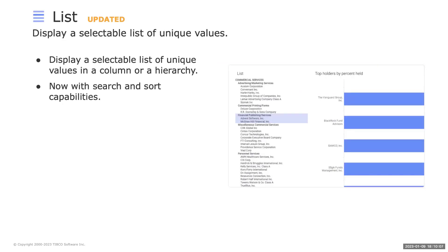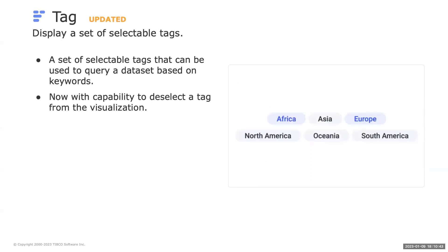We also have two visualization updates. The list visualization now supports searching through values to filter the list, including Spotfire search syntax, and supports sorting by a specific column, along with performance and look-and-feel improvements. The tag visualization, which can display a set of selectable tags to query a dataset based on keywords, now includes an improvement to marking with the ability to unmark all tags.